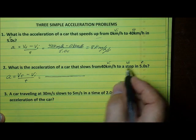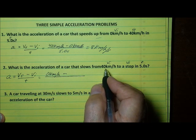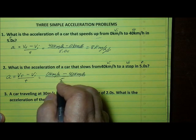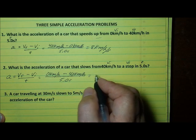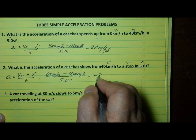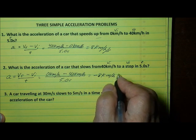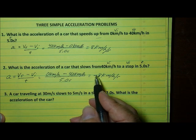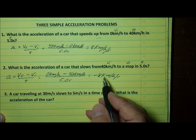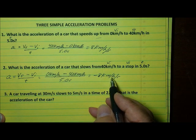The final velocity is 0 kilometers per hour, minus the initial velocity, 40 kilometers per hour, divided by the time, 5 seconds. That gives us 0 minus 40, which is negative 40, divided by 5 — that gives us negative 8 kilometers per hour per second. The negative sign tells us that this car is slowing down. It's negative acceleration, meaning the car is losing velocity at 8 kilometers per hour every second — the velocity is decreasing by 8 kilometers per hour per second.